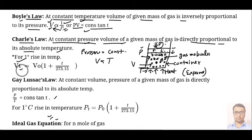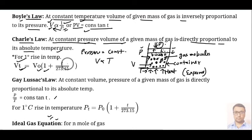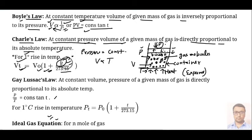Volume at any temperature V_T is given by the relation: V_T = V₀ × (1 + T/273.15), where V₀ is the initial volume and T is the amount of temperature. For one degree rise, this is the value for V_T. If you increase temperature by a certain amount, say delta T is 5 degrees Celsius, then you put that value in and get the volume at temperature T.